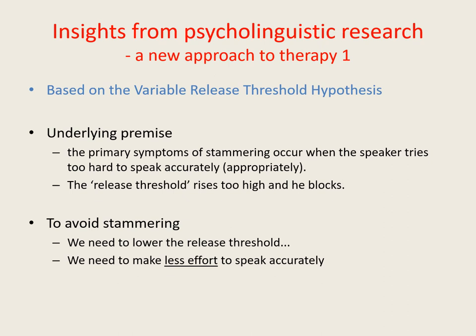If we block on a word, it means that the release threshold for that word is set too high. So in order to reduce the likelihood of blocking, we need to bring its release threshold down to a lower level. One way of doing this is by making less effort to speak it clearly and accurately. Most stammerers tend to put more rather than less effort into clearly speaking words they expect to block on, so making less effort on such words means doing the opposite to what you've probably been doing up until now.